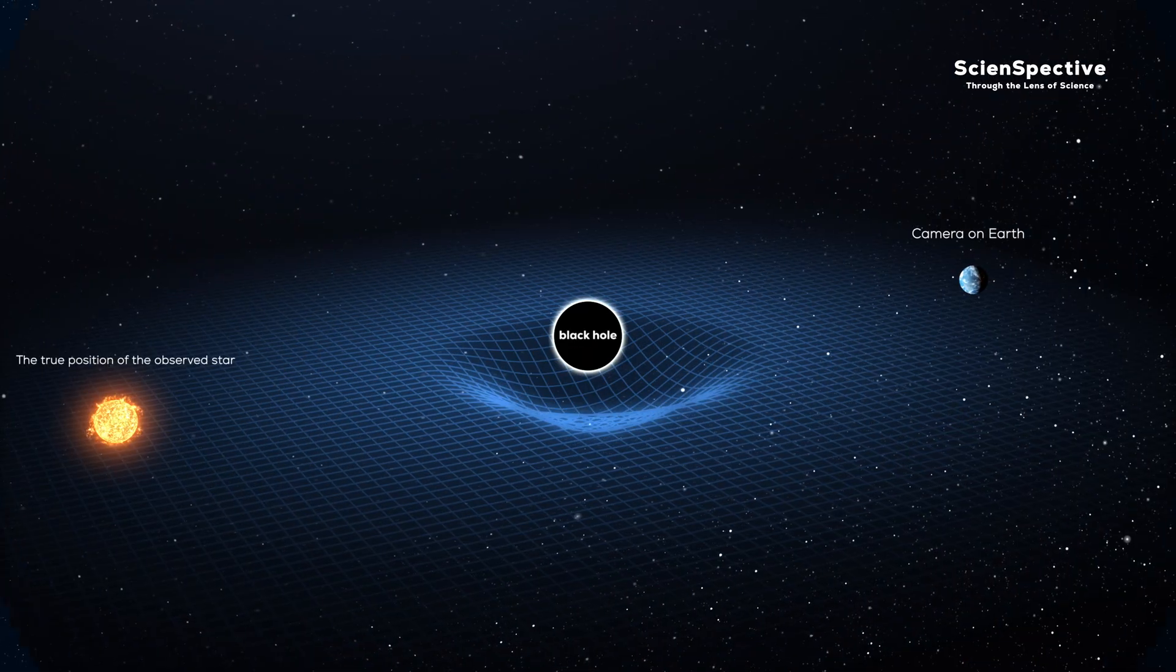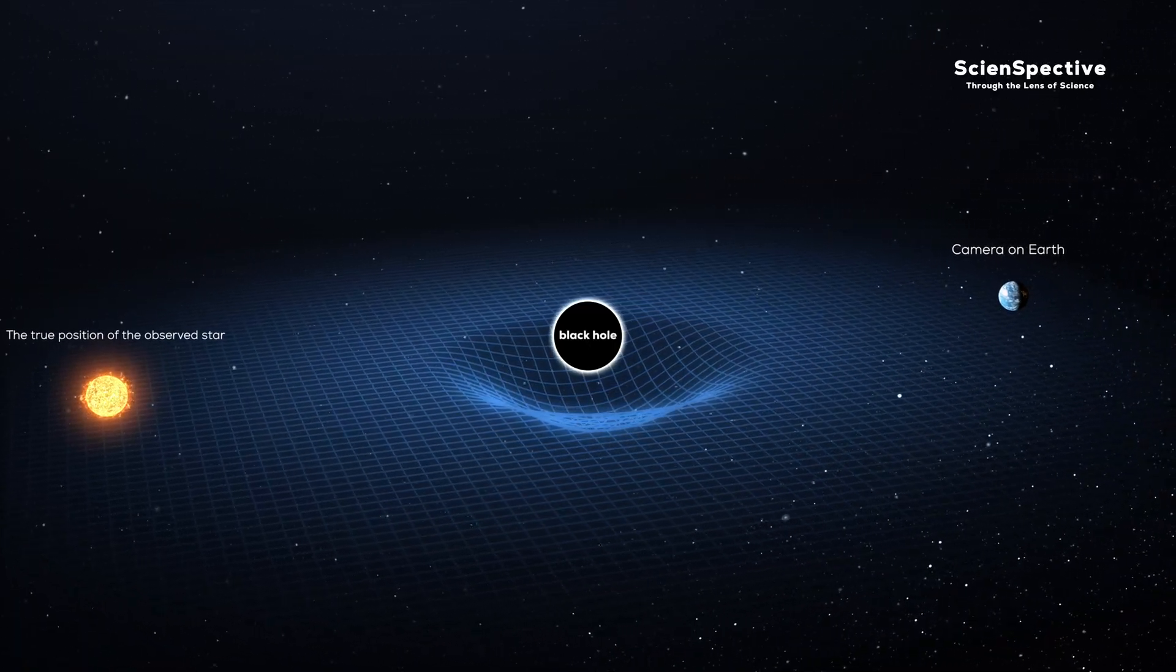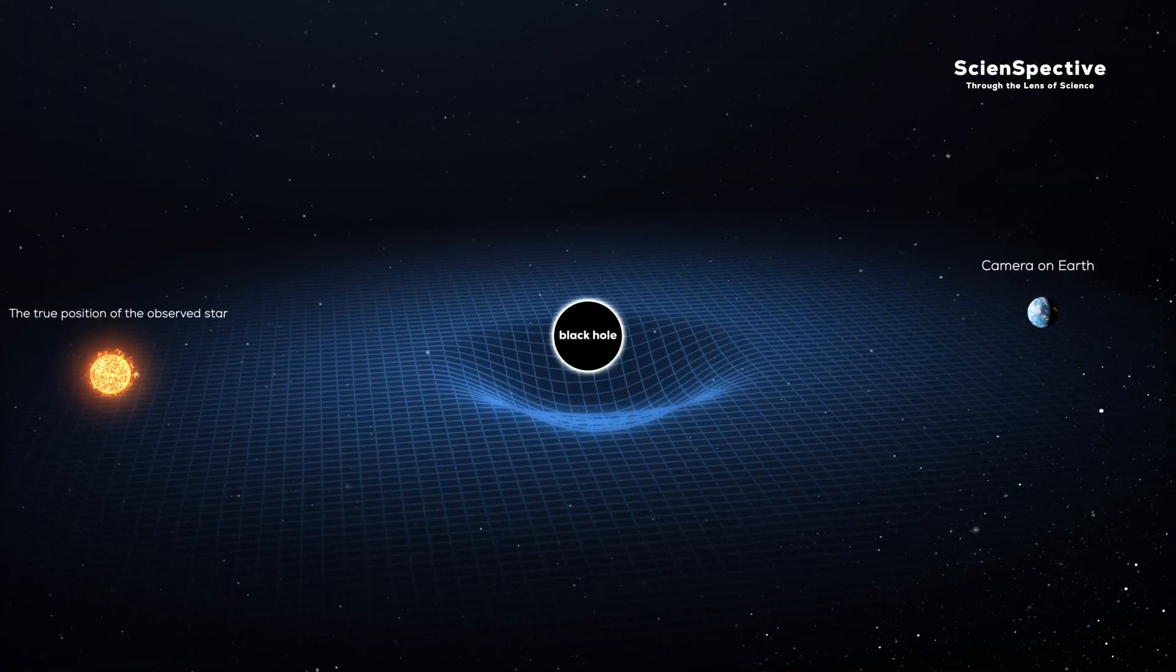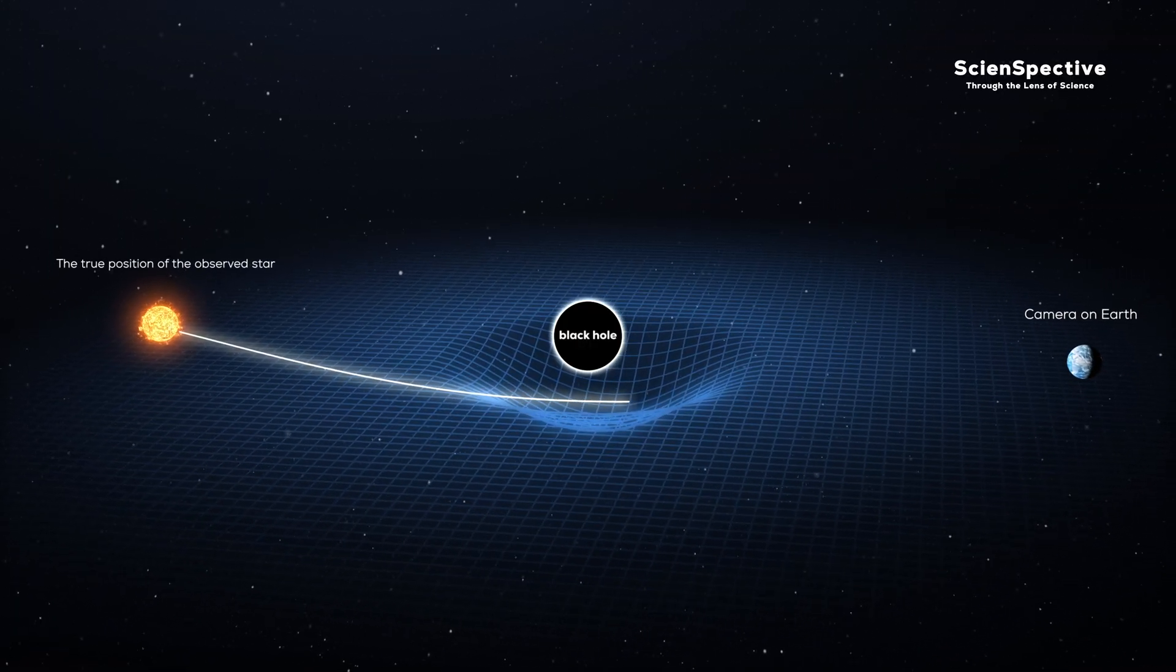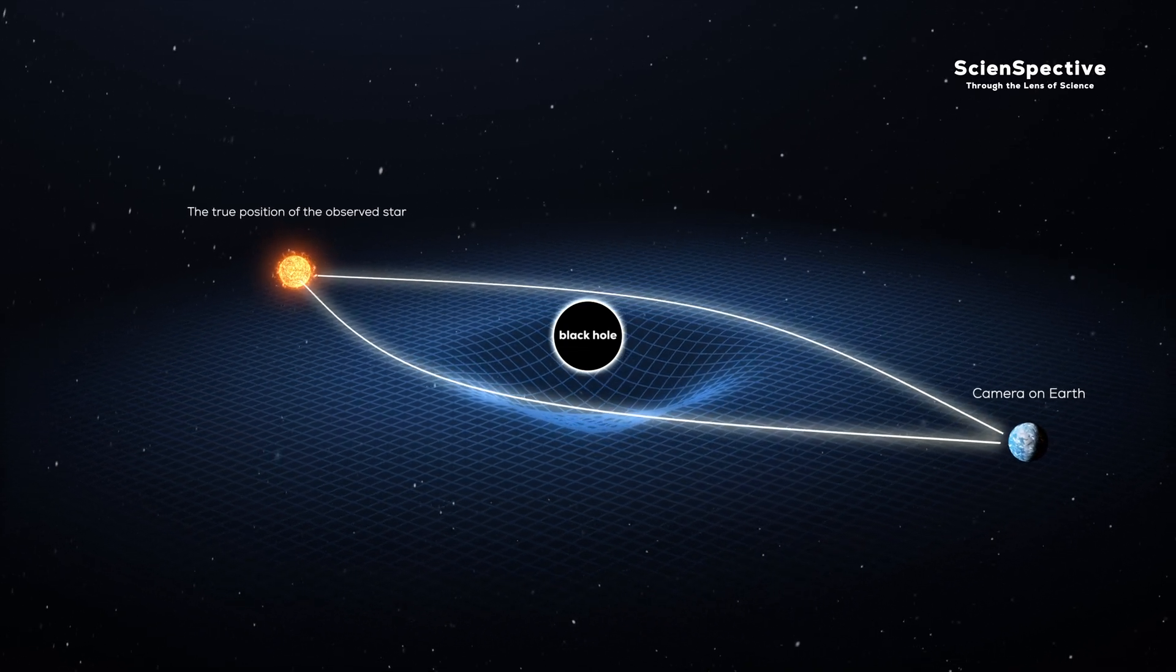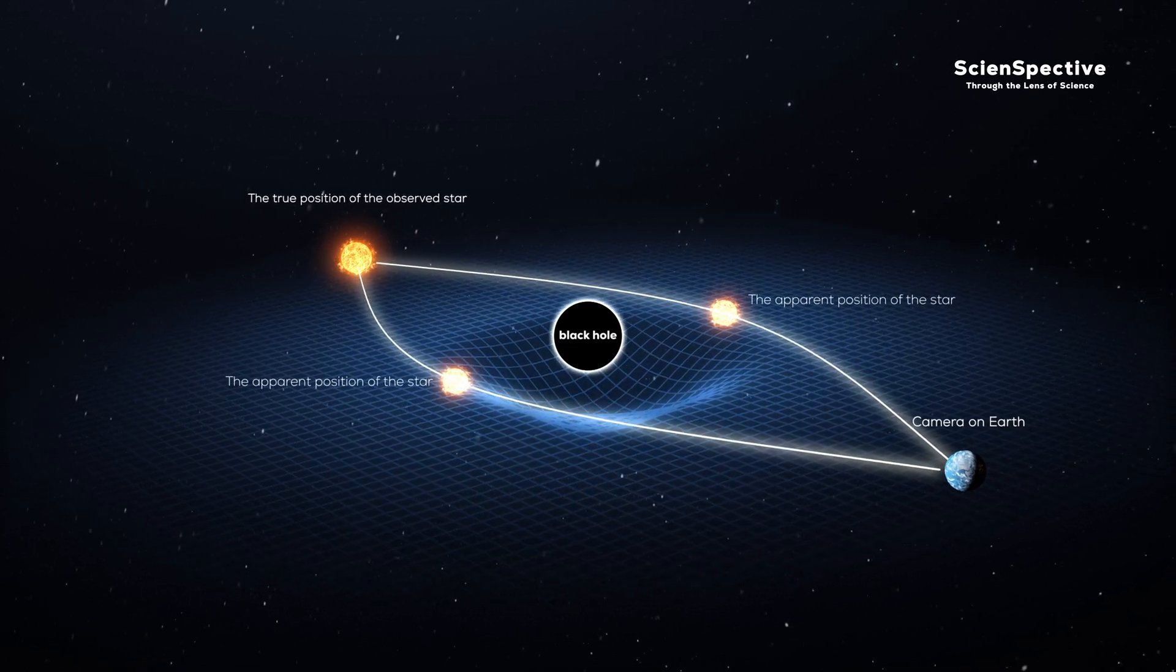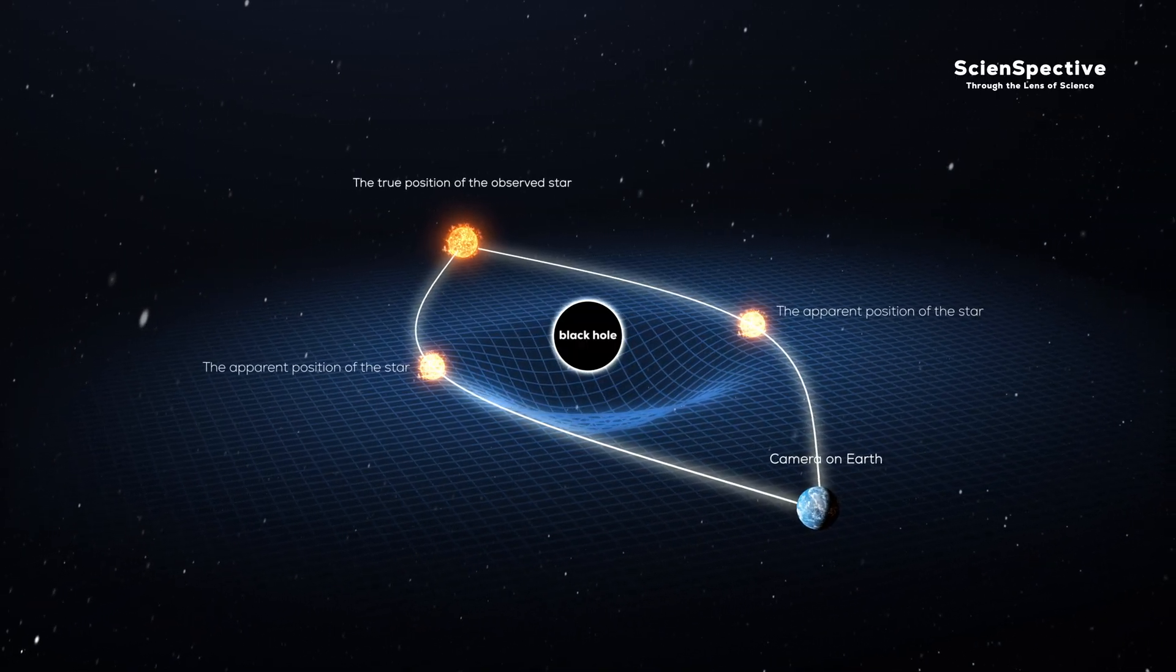If a black hole is not spinning, light rays from stars behind it reach us by the shortest path. But since they pass through the curved space around the hole, their paths also bend. One bent light ray might reach us from the left side of the hole, while another comes from the right side, producing two images of the same star.